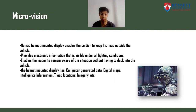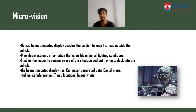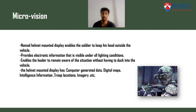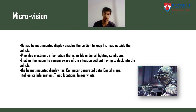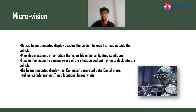Micro-Visions are Nomad Helmet Mounted Displays that enable soldiers to keep their heads outside vehicles. They provide electronic information visible under all lighting conditions — be it night, day, or any bad weather. They enable the leader to remain aware of the situation without having to duck into the vehicle, staying aware of troop and enemy locations. The helmet-mounted display shows computer-generated data, digital maps, intelligence information, troop locations, and imagery.